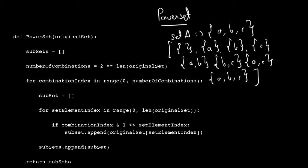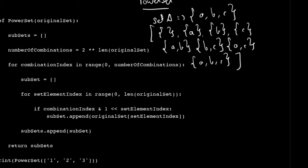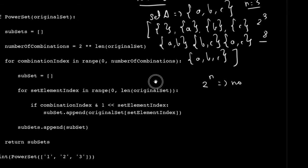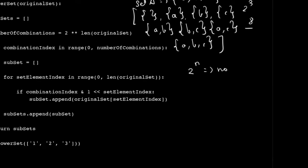Before we get into the algorithm itself, I want to talk about some meta information. If you count how many elements are in the power set, there are eight. There are three elements in set A, and eight elements in the power set, so you can deduce that 2 raised to n gives you the number of elements in the power set. Here n equals 3, so 2 raised to 3 is 8. That's just how math works. There's something more that might blow your mind.